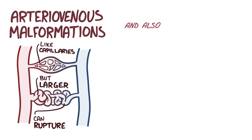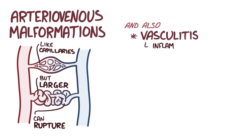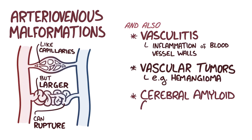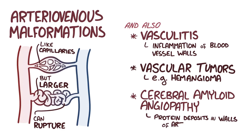Intracerebral hemorrhages are also associated with conditions that damage the arteries in the cerebrum, like vasculitis — a disease where inflammation of the blood vessel walls occurs — vascular tumors like hemangioma, which is a benign vascular tumor of the endothelial cells of the blood vessels, and cerebral amyloid angiopathy, which is a degenerative disease where abnormal protein deposits in the walls of the arterioles make them less compliant.